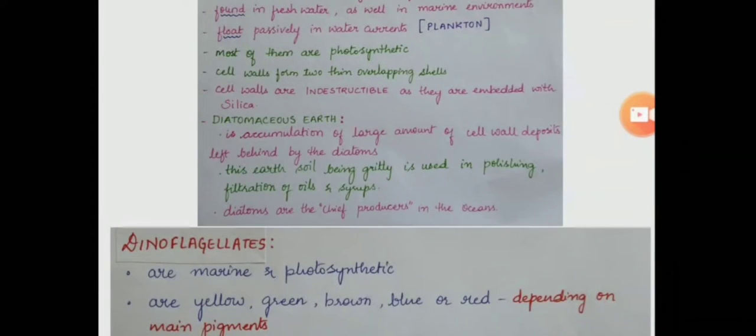Most of the chrysophytes are photosynthetic and their cell walls form two thin overlapping shells. Their cell walls are indestructible because they are embedded with silica. There is a term you will have to remember here, that is diatomaceous earth.